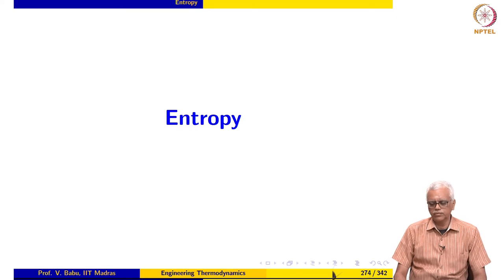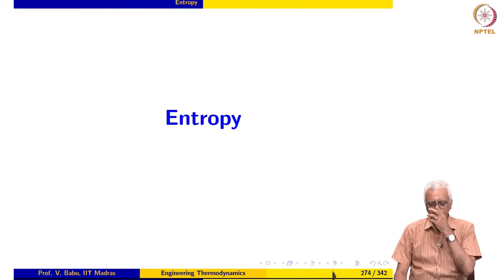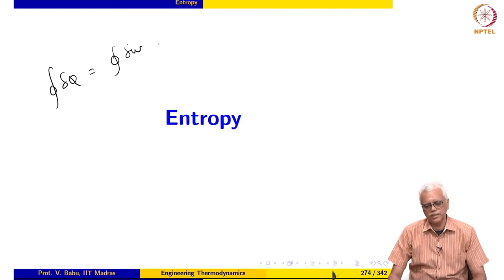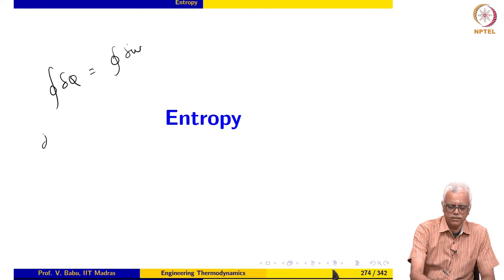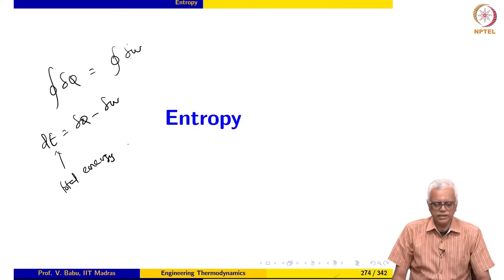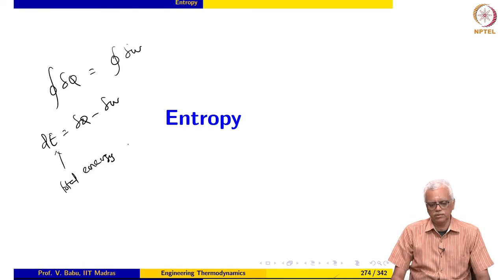We will begin our discussion of entropy in this lecture. Just as the cyclic form of the first law led to the identification of a new property, namely total energy — where we wrote the cyclic integral of delta Q equal to the cyclic integral of delta W — in the same manner we will identify a new property named entropy from a cyclic law that we will develop for reversible processes.